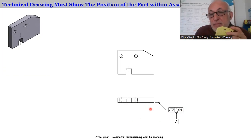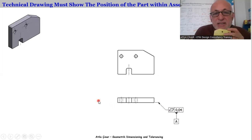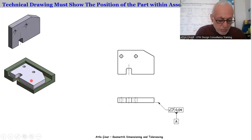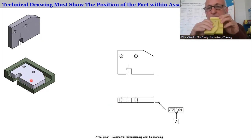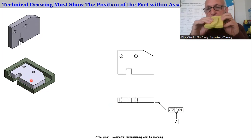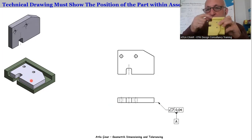When the manufacturer sees only this drawing with this symbol, it tells them that the part will sit on another part from this surface. So this is the first contact surface — the part will contact with another surface, with the counterpart, first of all.